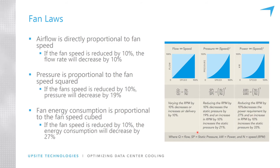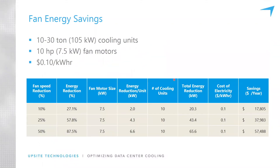So how this plays out: if we have a computer room with 10 thirty-ton units — 105 kilowatts each, by the way — I really encourage everyone to consider cooling unit capacities in terms of kilowatts and not tons, because it's much easier to compare apples to apples. So we've got 10 105-kilowatt units.